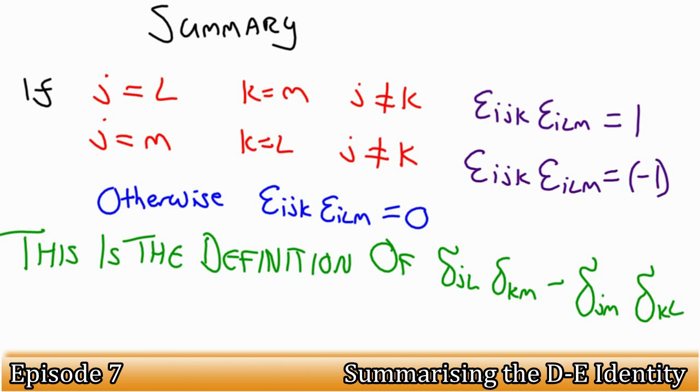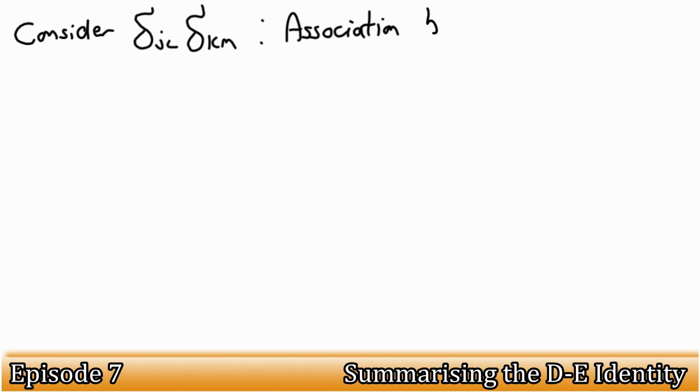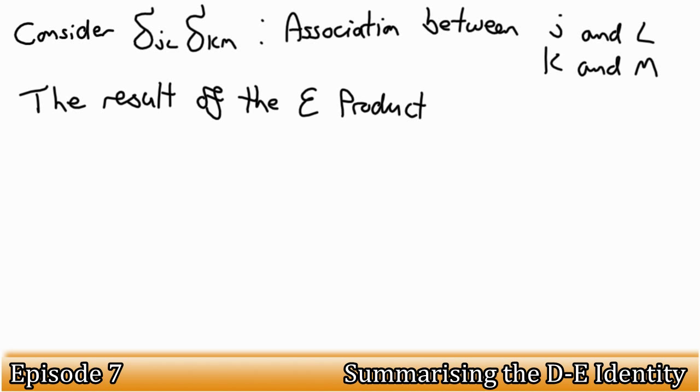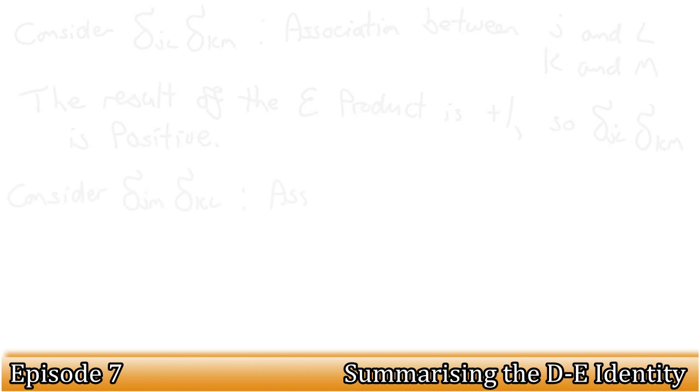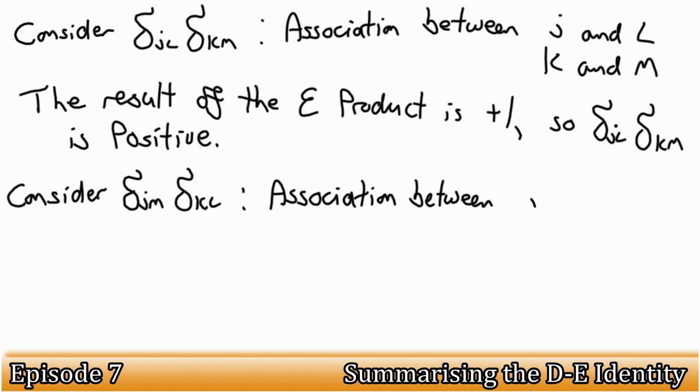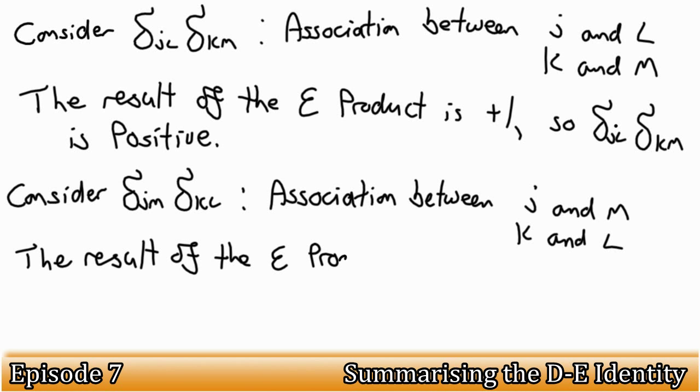Let's take the first term, delta j l delta k m. The first delta has the association between j and l, whilst the second delta has the association between k and m. The result of this product is positive, as the Kronecker delta only has positive components. Similarly for the second term, we have associations between j and m and k and l, but this time the result is negative, as we are subtracting the product.